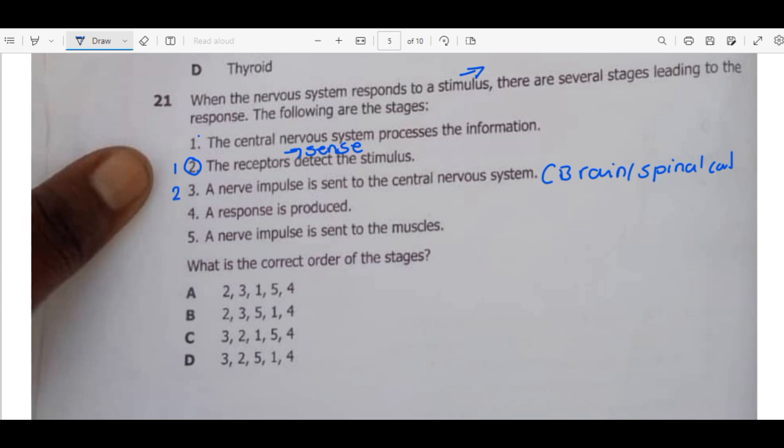So this is our second one here. A nerve impulse is sent to the central nervous system. Then what happens? Whenever a nerve impulse is in the central nervous system, that information must be processed or interpreted. So the third one is this one: the central nervous system processes the information. Then after that, what happens? For a response to be produced, an impulse must be sent to the effectors. What are the effectors? Effectors are organs like muscles. So this is our fourth one here. Then from there, the fifth is this one, so a response is produced.